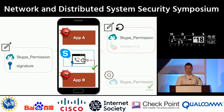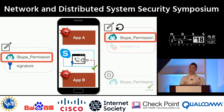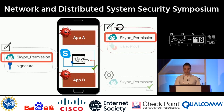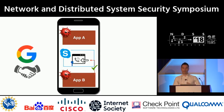The problem here is that custom permission names are arbitrarily defined by untrusted third parties, and the system does not have any way of tracking ownership of these custom permissions. This was also reported to Google, which has also acknowledged it as another serious security vulnerability.